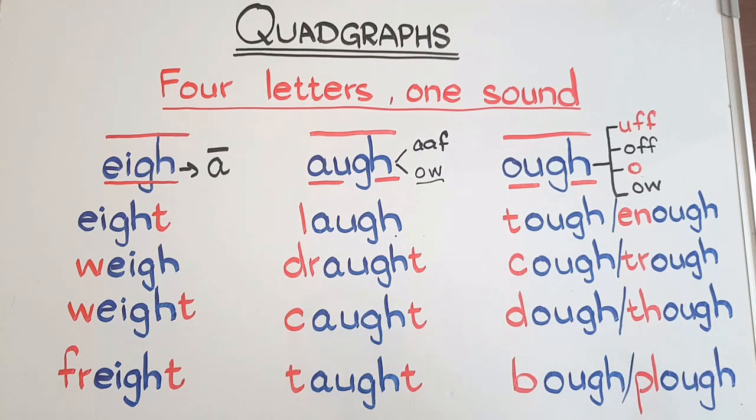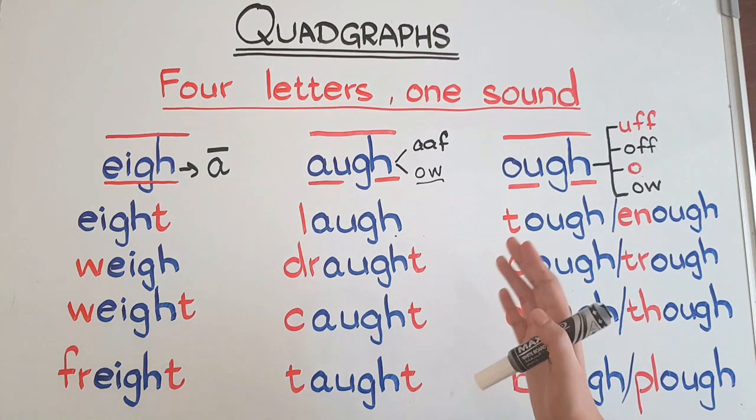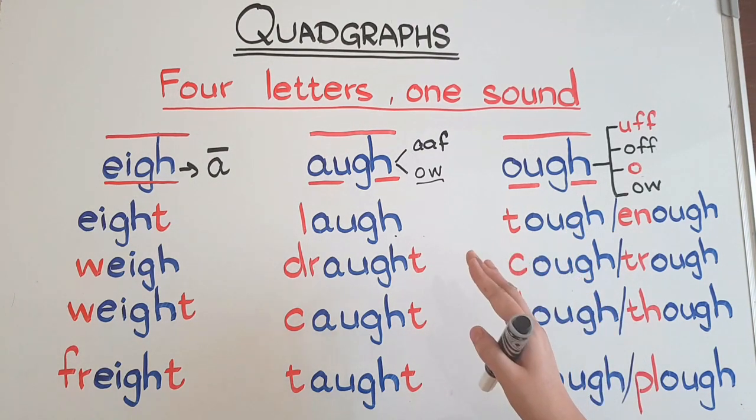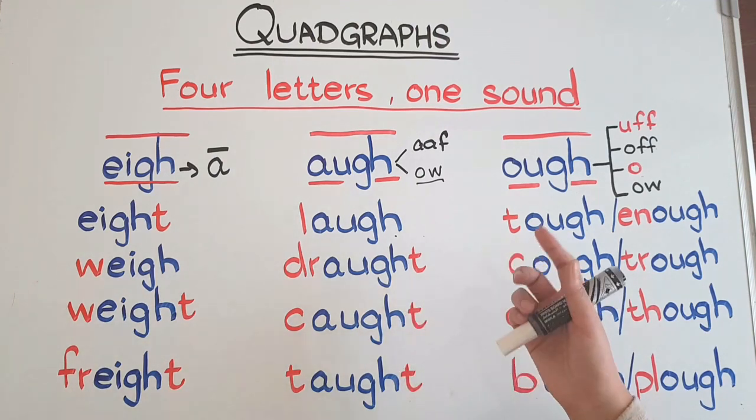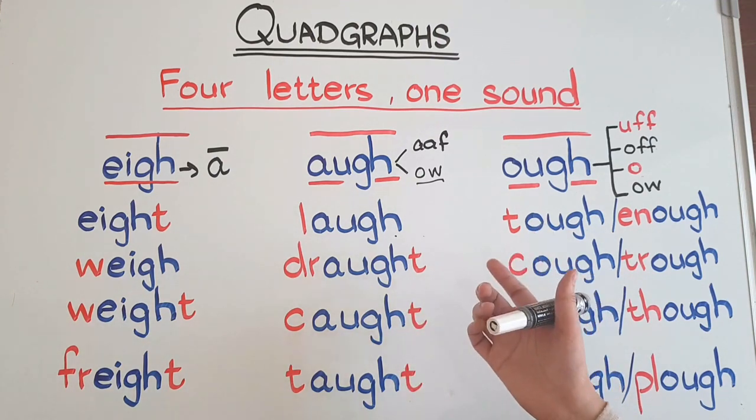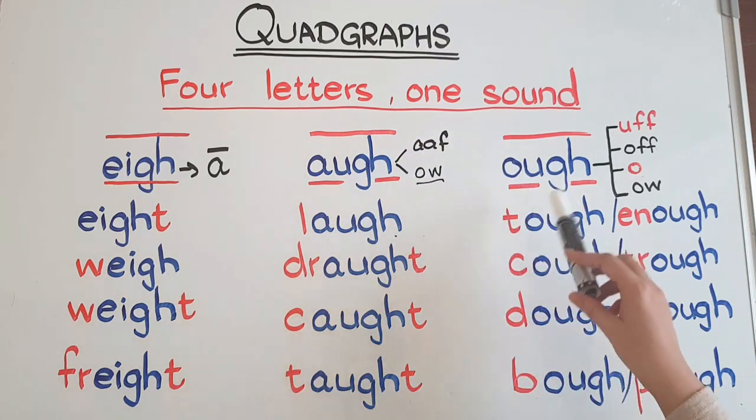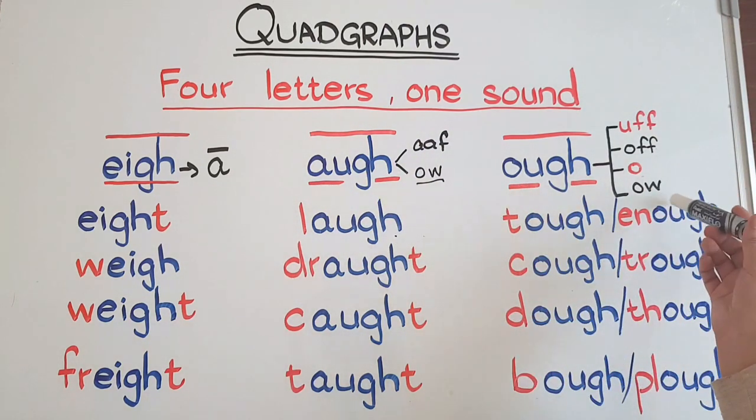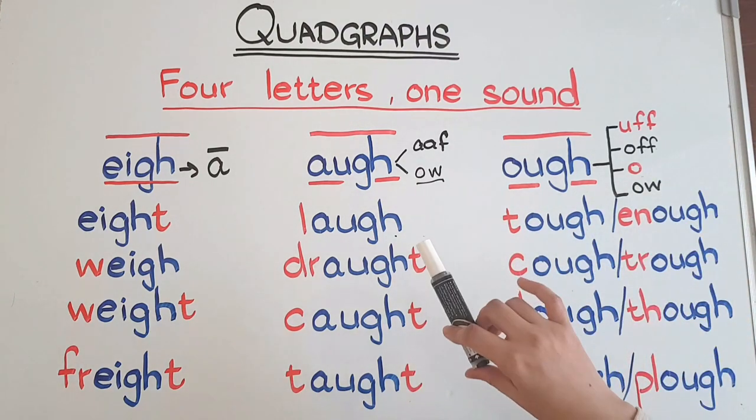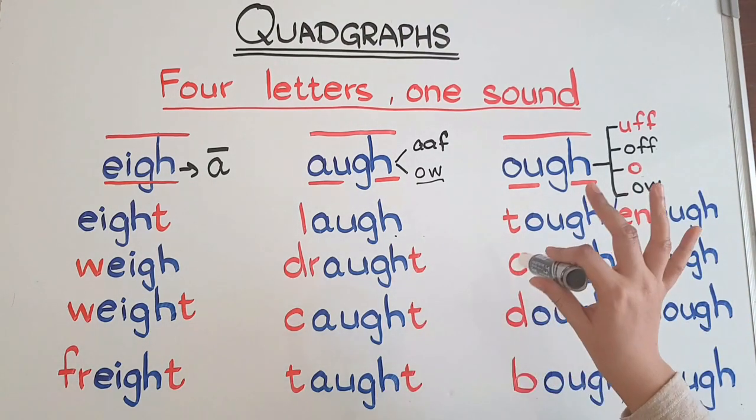Let me repeat: tough, enough, cough, trough, dough, though, bough, plough. After learning about the different pronunciations of this quadgraph, you might be thinking I would give you a rule for when O-U-G-H is 'uff', 'off', 'o', or 'ow'. But unfortunately, there is no rule.